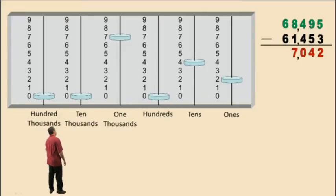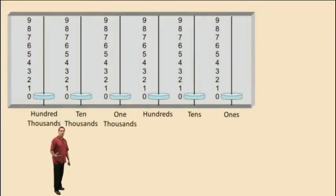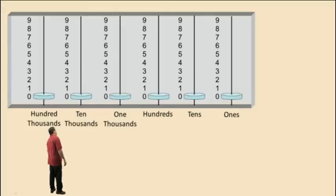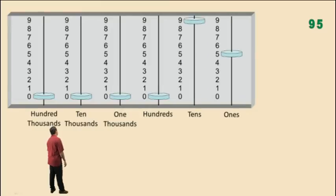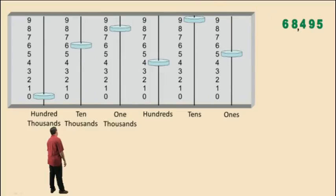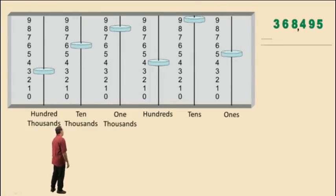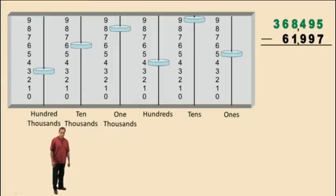Now let's perform a subtraction problem that requires borrowing. Let's enter 5 ones, 9 tens, 4 hundreds, 8 thousands, 6 ten-thousands, and 3 hundred-thousands. From this number, we are going to subtract 61,997.